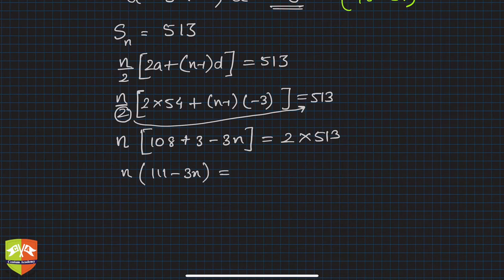So this is nothing but n times 3(37 - n) = 1026.